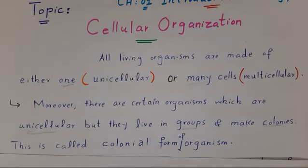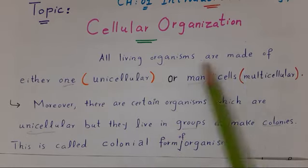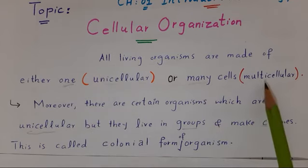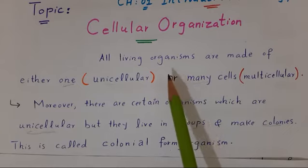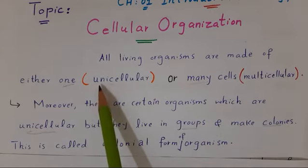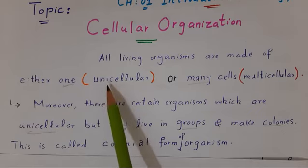As you know, the cell is the basic structural and functional unit of all living organisms. All living organisms are made of either one cell — unicellular — or many cells — multicellular. Organisms made of a single cell are called unicellular organisms. For example, bacteria, amoeba, paramecium, euglena, etc.